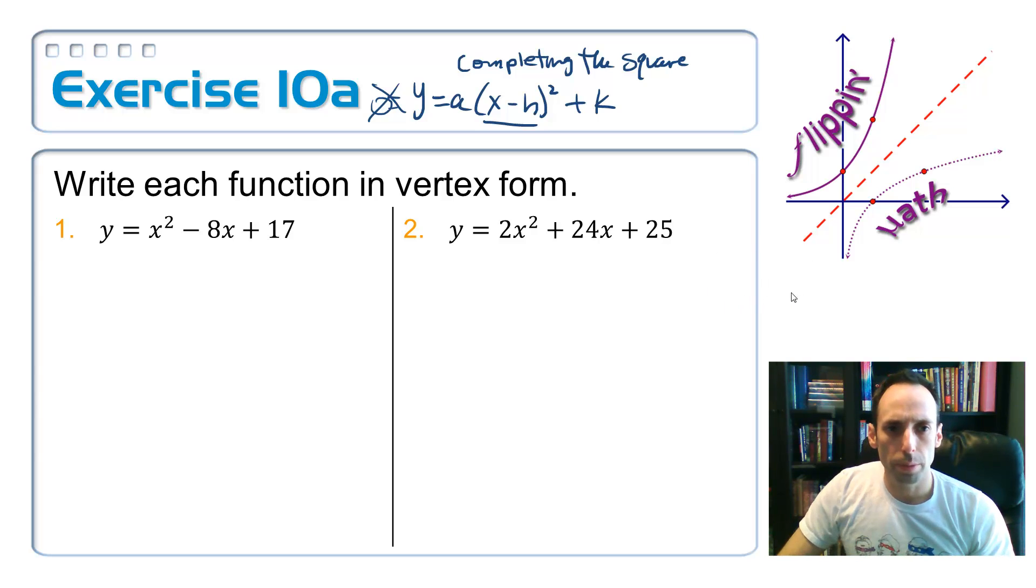I'm going to write right underneath the flipping math logo. Would you agree if I have this equation y equals x, what we've done before when we completed the square is we added the same number to both sides. So if I had x, I could add 2 to this side as long as I added 2 to the left-hand side. It was okay.